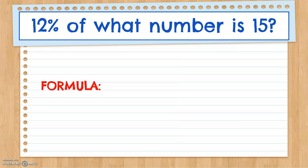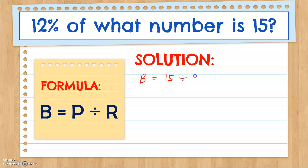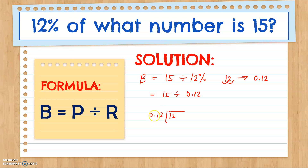Next: 12% of what number is 15? Again, this question is asking for the base, so we use the formula Base equals Percentage divided by Rate. We have 15 divided by 12%. Converting 12% to a decimal gives us 0.12. Now we divide 15 by 0.12. The divisor is a decimal number, so we move the decimal point two times to the right, and we also move the decimal point of the dividend twice to the right. Our new numbers are 1,500 divided by 12.